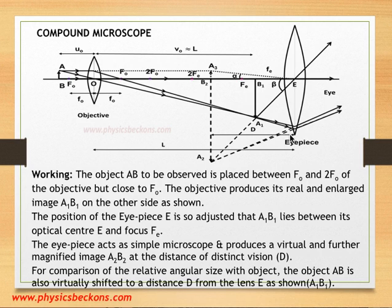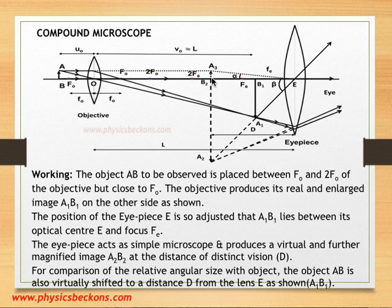Here, capital D is the distance of distinct vision, which is about 25 centimeters for a normal eye. To study the relative size of the final image and the object AB, both must be placed at the same distance. So we shift AB to distance D, the distance of distinct vision, to compare the angular sizes. The angular size of the image is beta and the angular size of the object is alpha.